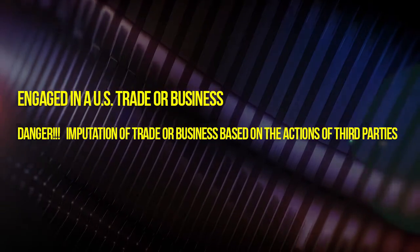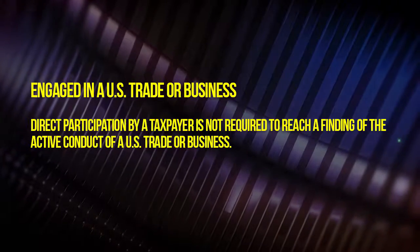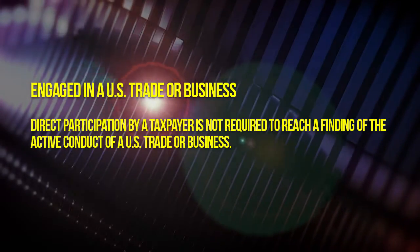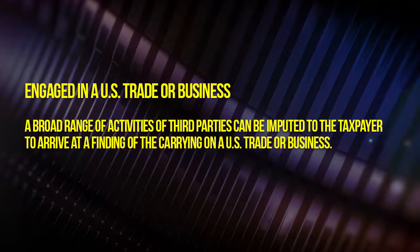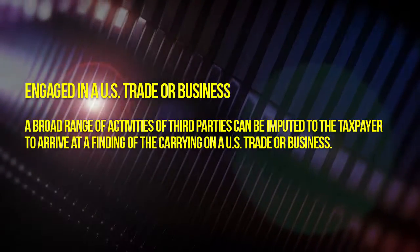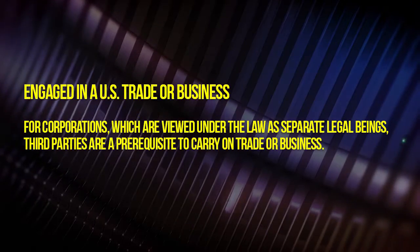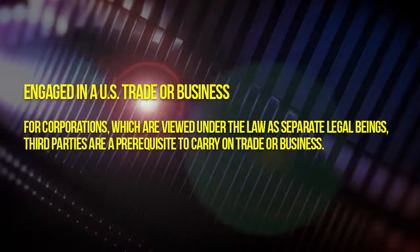Danger: the imputation of trade or business because of the actions of third parties can cause you to have a U.S. trade or business when you don't expect to have one. The direct participation of an offshore individual or entity is not required for the finding of a U.S. trade or business, provided there is sufficient agency of U.S. persons. A broad range of activities conducted by third parties can impute U.S. trade or business activity to an offshore person. Keep in mind, for corporations that are considered separate legal beings from their owners, the actions of third parties are necessary to carry out any type of business.